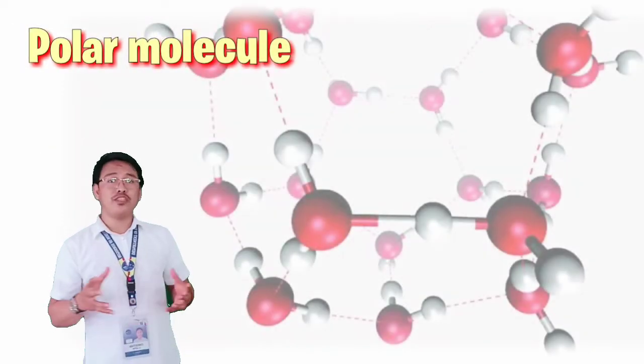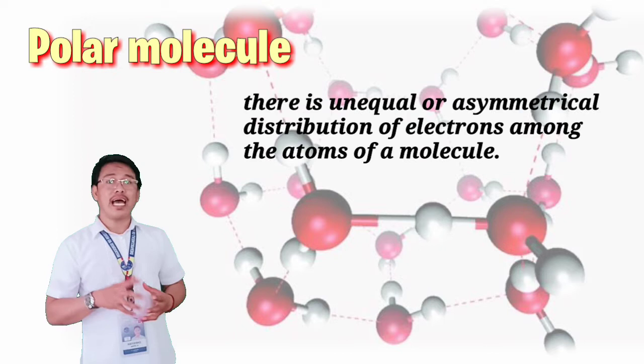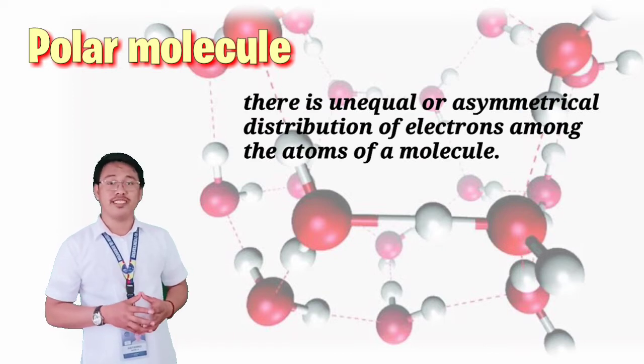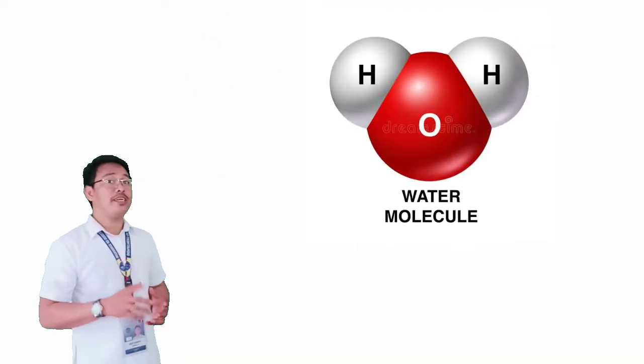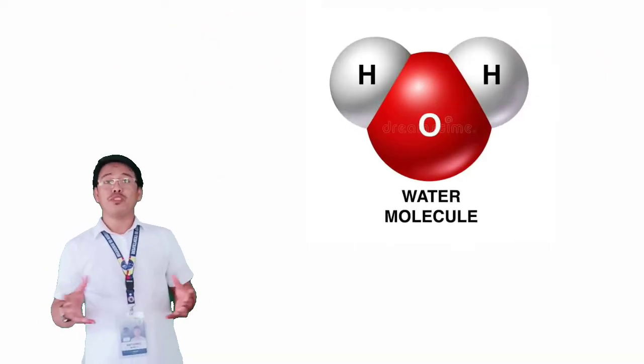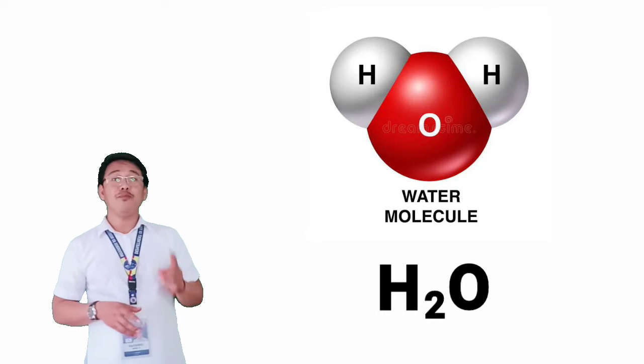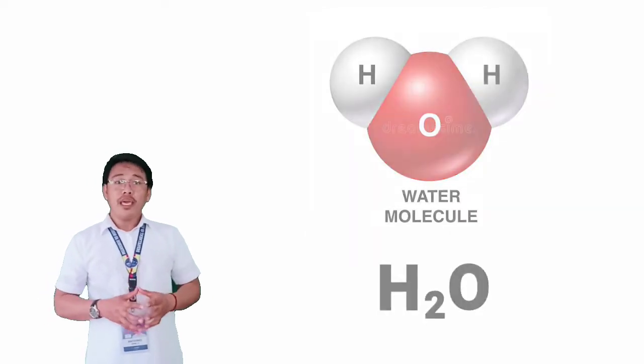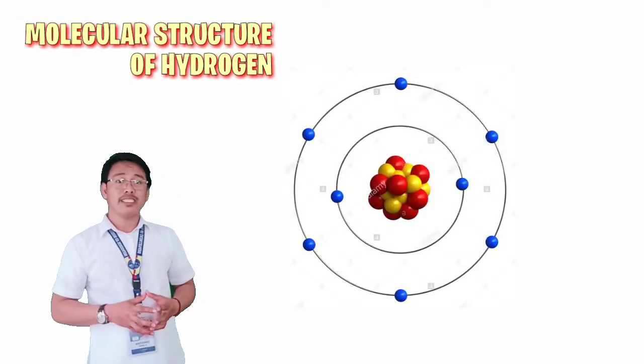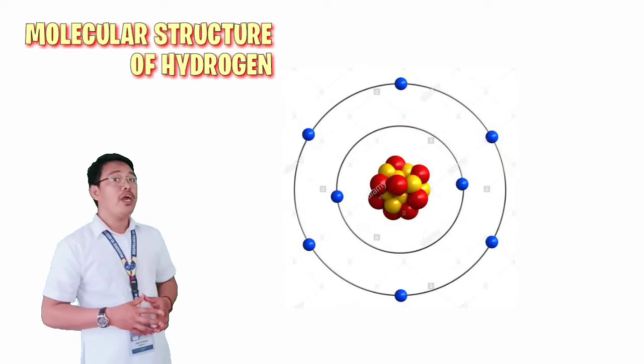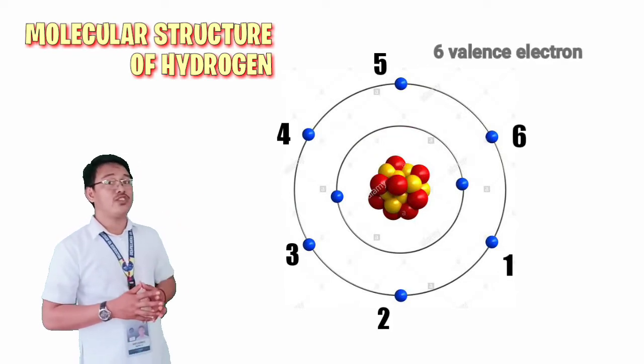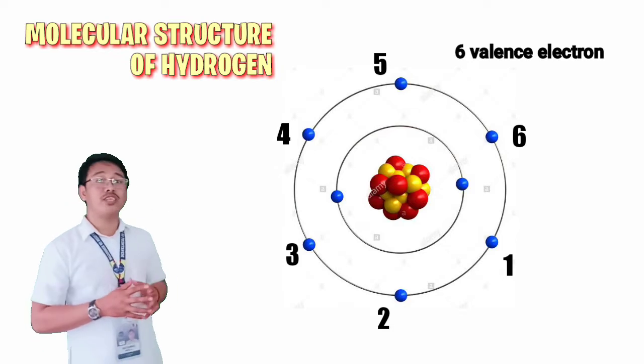A molecule is said to be polar when there is unequal or asymmetrical distribution of electrons. What does this mean? Water, for example, is a molecule composed of two hydrogen atoms and one oxygen atom. If we draw the molecular structure of oxygen atom, you will notice that it has only six electrons in its outermost shell.